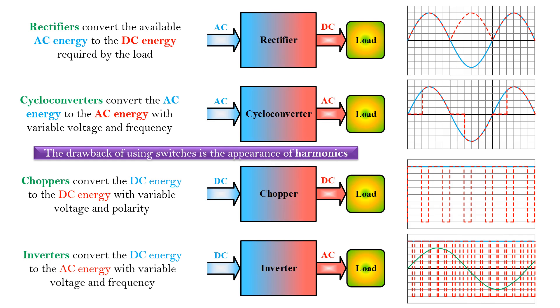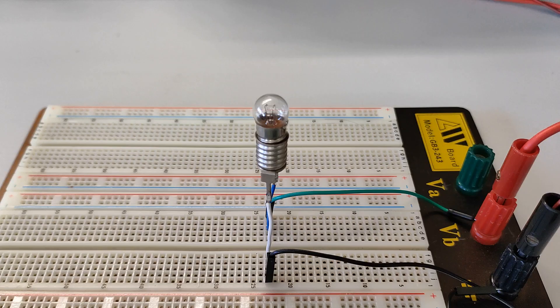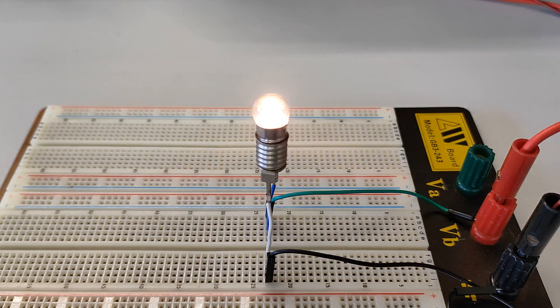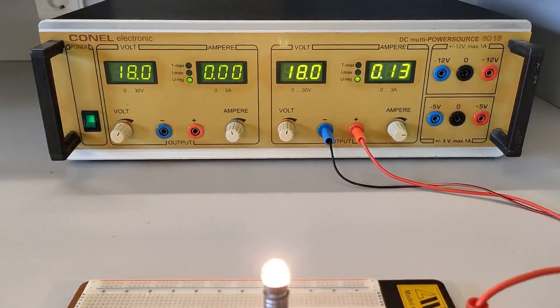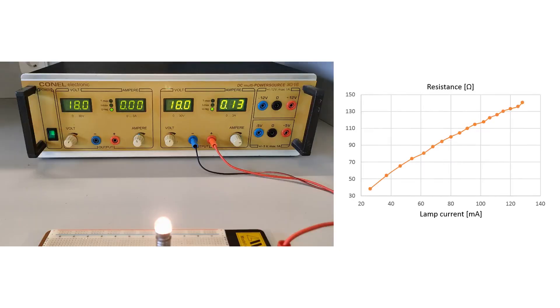To understand power converters, we set the task of controlling the brightness of an incandescent lamp, which is powered by an 18 volt DC source. Lamp resistance is not constant, but increases with current due to temperature. The simplest method of controlling power and brightness requires connecting a variable power resistor in series with the lamp.